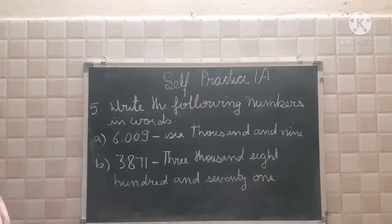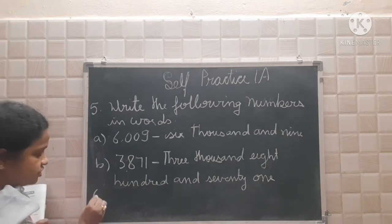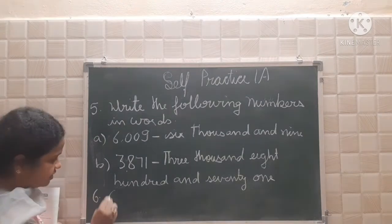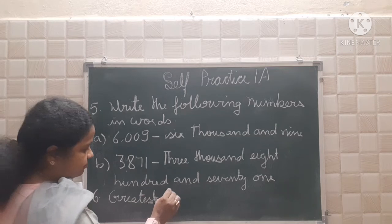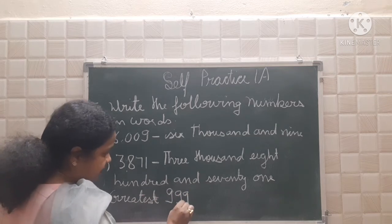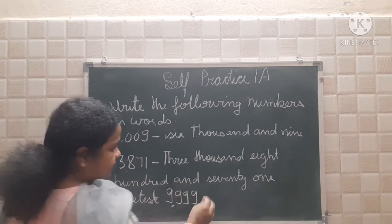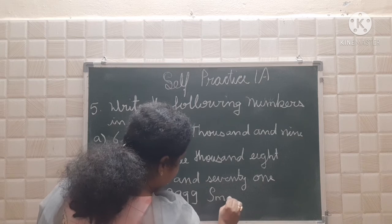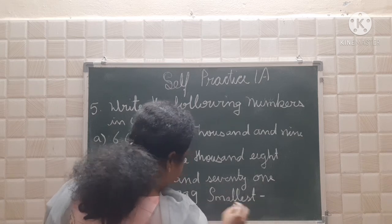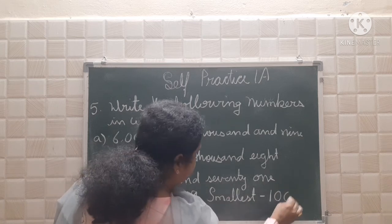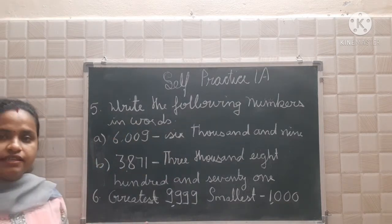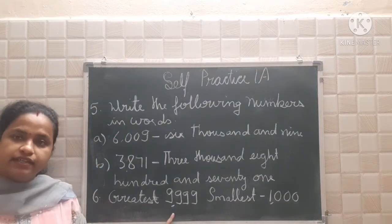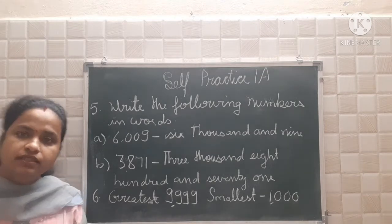Write the greatest and the smallest four-digit numbers. See question number 6. Which is the greatest four-digit number? The greatest will be 9,999. And what will be the smallest four-digit number? That will be 1,000. The greatest four-digit number is 9,999 and the smallest one is 1,000.